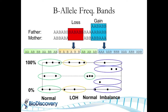If you had four copies in a balanced state — gaining another maternal copy as well — you would have four A alleles, making it impossible to distinguish a balanced four-copy state from a normal diploid state using BAF alone.